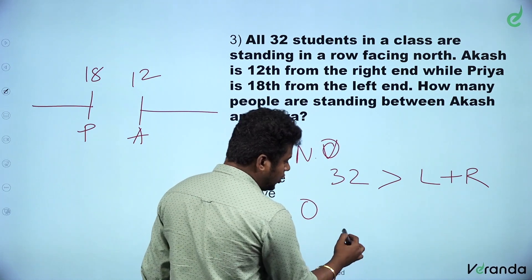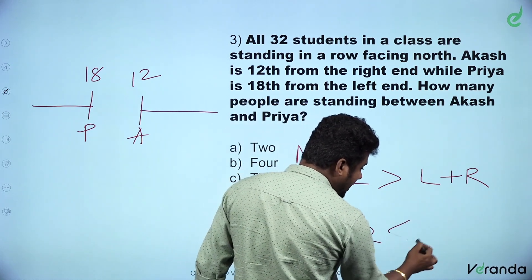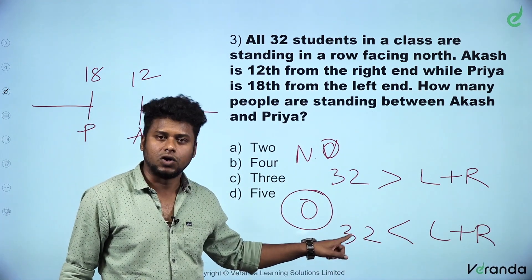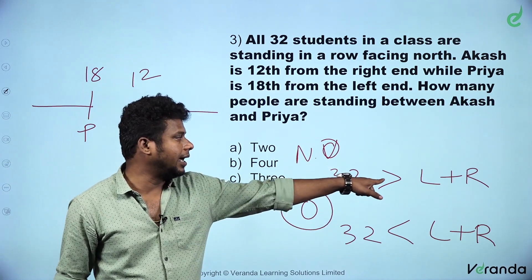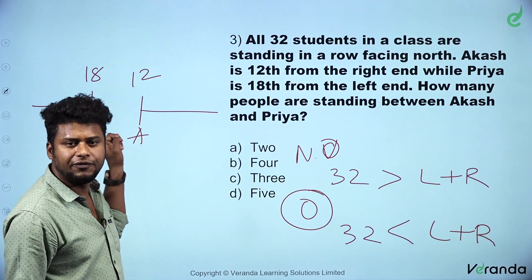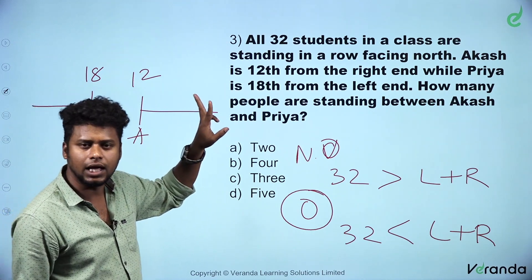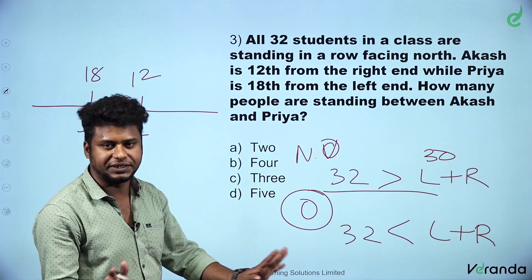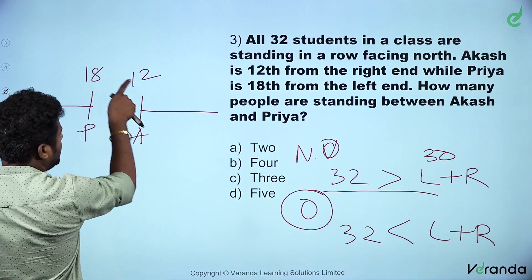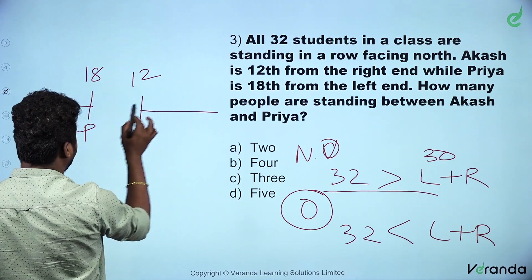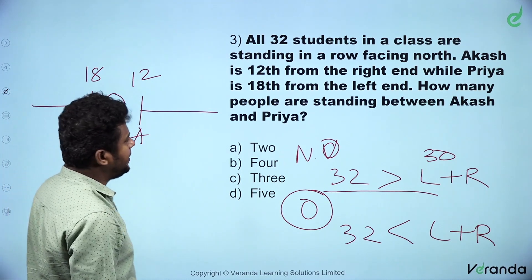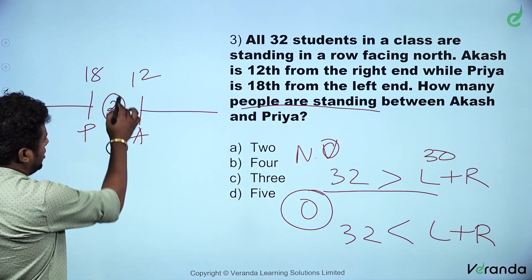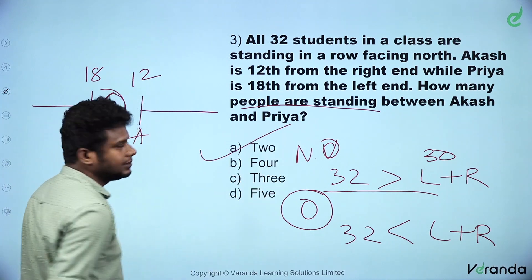If the total is less than left plus right, then there is overlap. If the total is less than left plus right, you need to apply the overlap formula. Between Akash and Priya, there are 2 people. So the answer is Option A, 2.